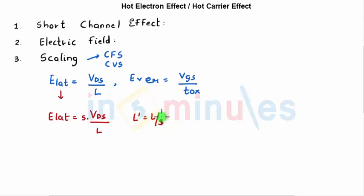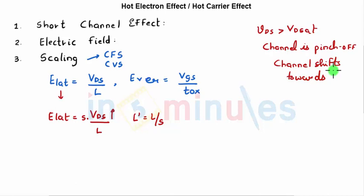We also know that when my VDS is greater than VDSat, my channel is pinched off. And if I keep on increasing my VDS further, my channel keeps on shifting towards the left in saturation region, shifts towards the left. That means my channel length is effectively reduced, so length is reduced here further. This also will lead to an increase in E lateral.